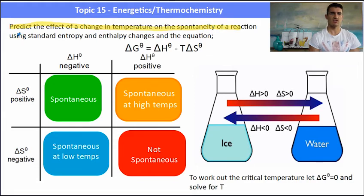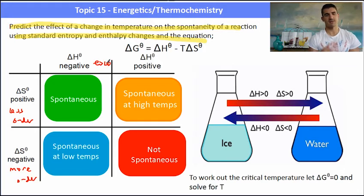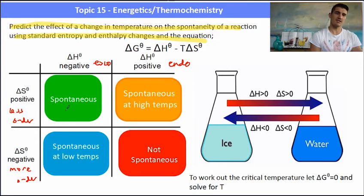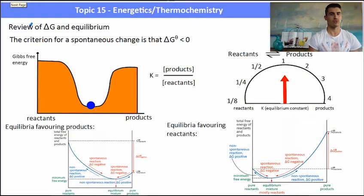We need to predict what effect changes in temperature have on entropy and enthalpy and how that impacts Gibbs free energy. This table helps identify how temperature changes affect reactions. If delta S is positive and delta H is negative, the reaction is always spontaneous. If delta S is negative and delta H is positive, it is always non-spontaneous. The other two quadrants depend on temperature, and when we need to find the critical temperature, we solve for T by setting delta G = 0.